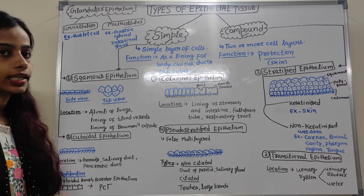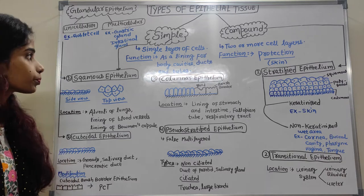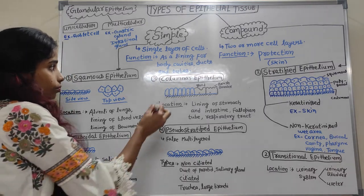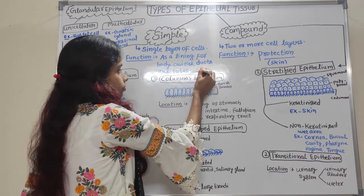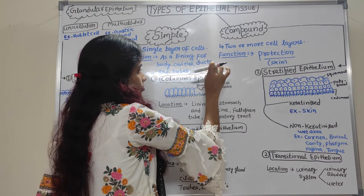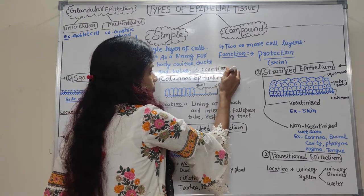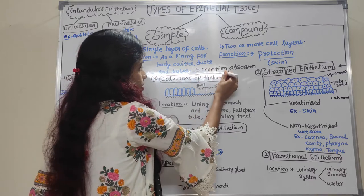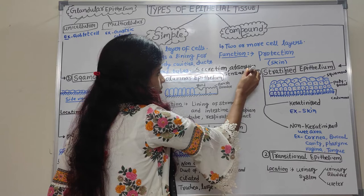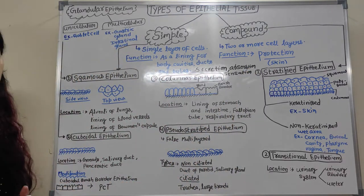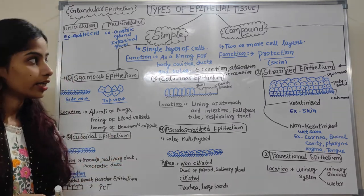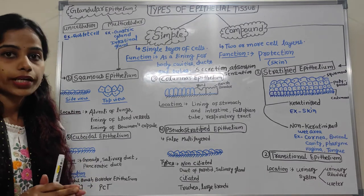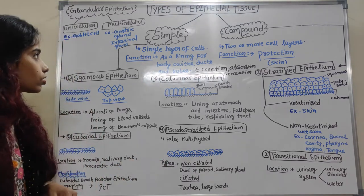Simple epithelium tissue has a single layer of cells. Its functions are secretion, absorption, and sensation. Compound epithelium tissue has two or more layers of cells, and its function is protection, as found in our skin — wherever protection is needed, compound epithelium is formed.